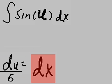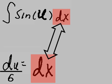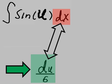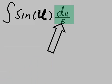There's my dx and there's my dx. Same, same. But dx equals du over 6. So, let's move that over and move that up and substitute.